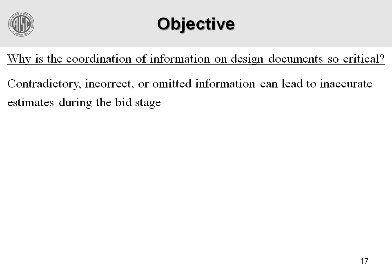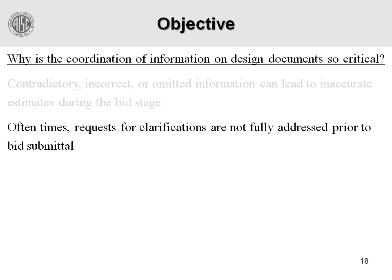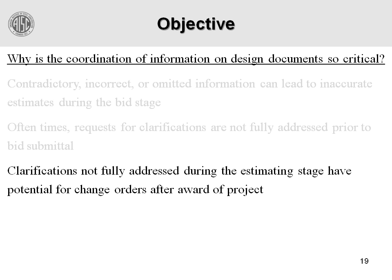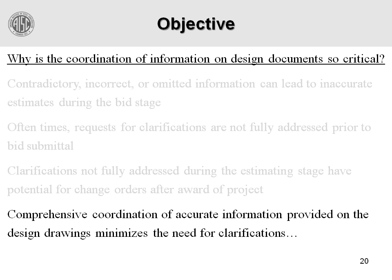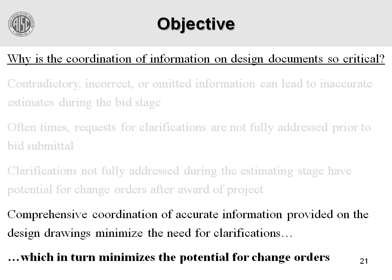The next question: why is coordination of the information on the design document so critical? Contradictory, incorrect, or omitted information can lead to inaccurate estimates during the bid stage, and requests for clarifications that aren't fully addressed prior to the bid being submitted. Any clarification not fully addressed during the estimating stage has the potential for change orders after the award of the project. A comprehensive coordination of accurate information on the design drawings minimizes the need for clarifications, which in turn minimizes the potential for change orders.